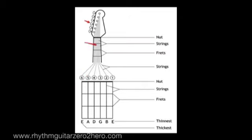...up we have the second string, which is the B. And then the first string is also an E string, but in this case it's actually the thinnest string and it also happens to be the highest in pitch, the highest sounding string on the guitar. All right, so let's have a look at the frets. As you can see on...